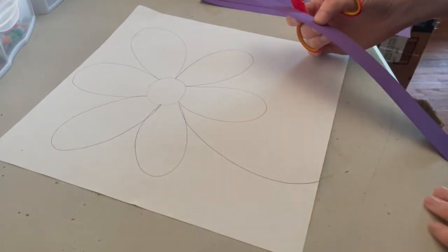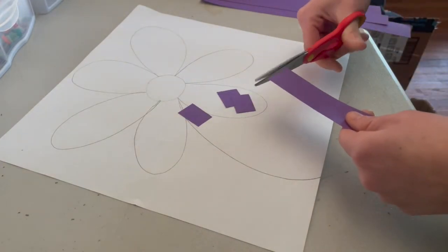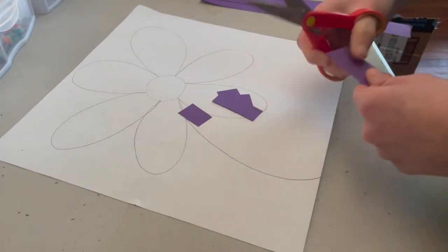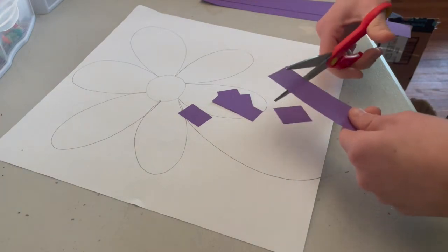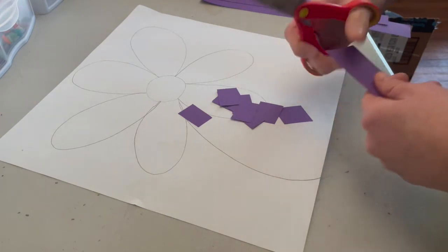Now we're going to use these long rectangles to cut squares and smaller rectangles and even triangles. You can cut some triangles by cutting your square in half diagonally. I will show you in just a moment.